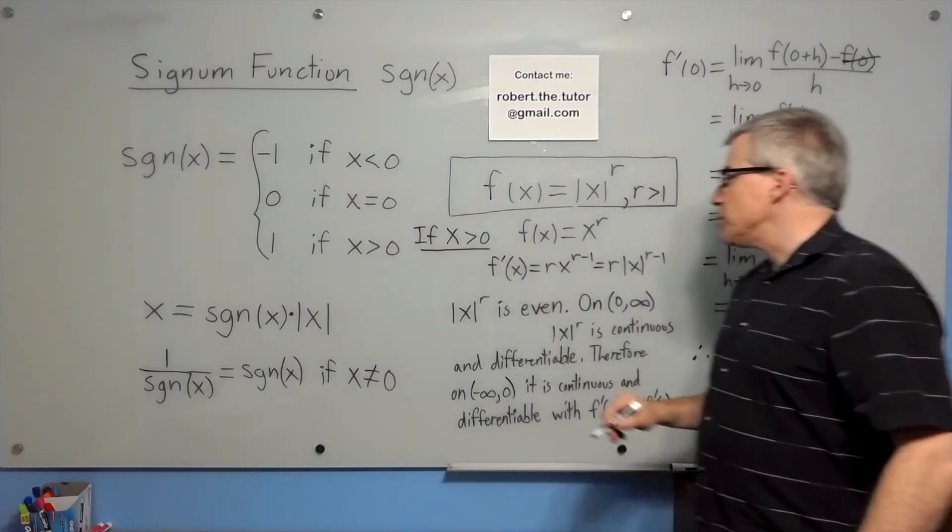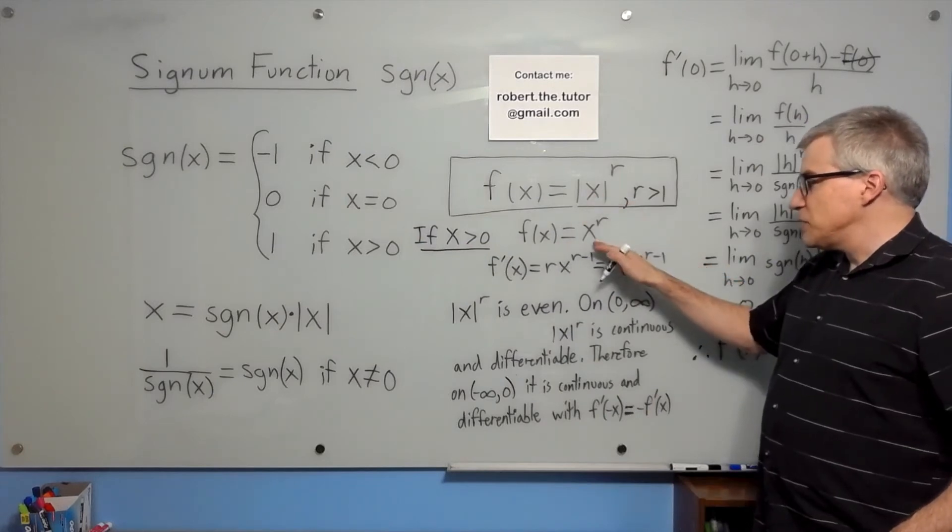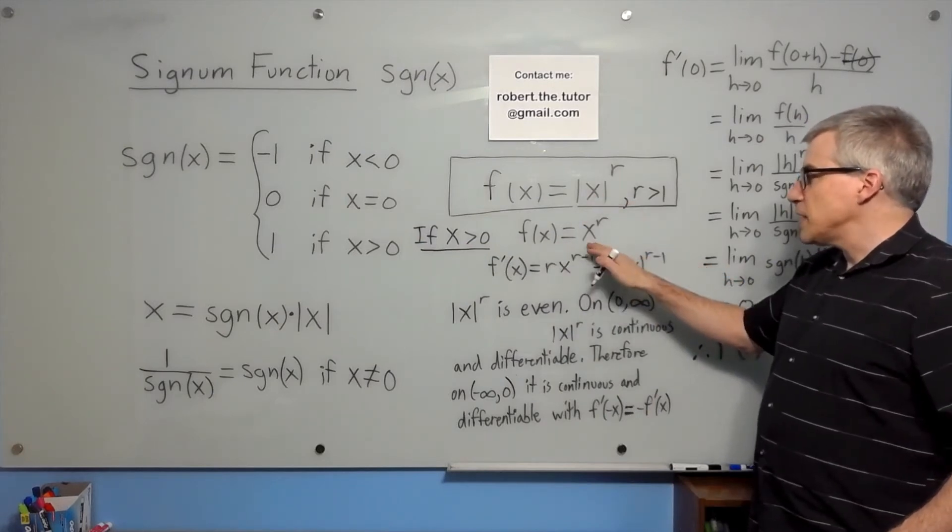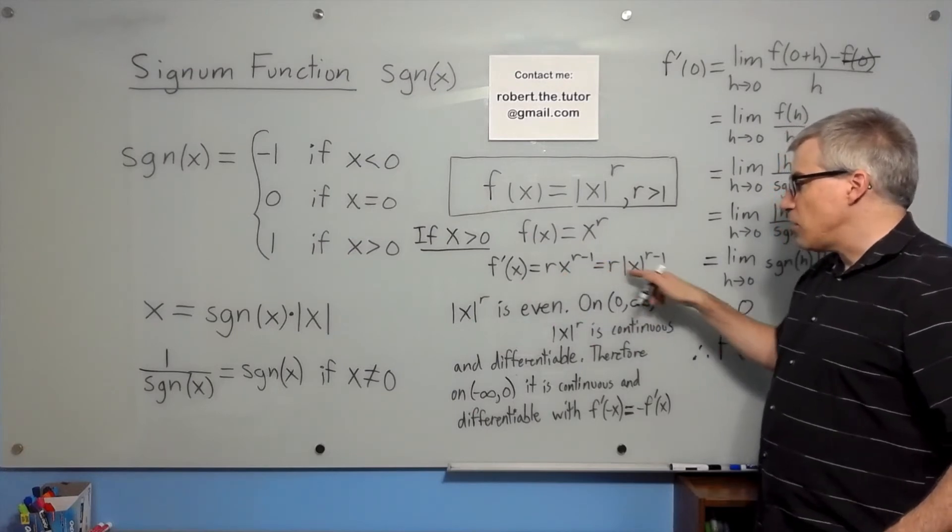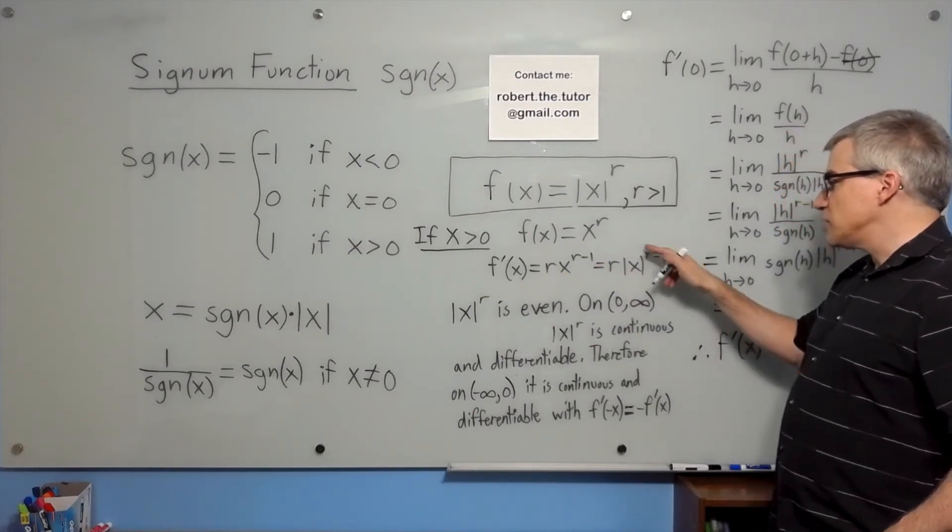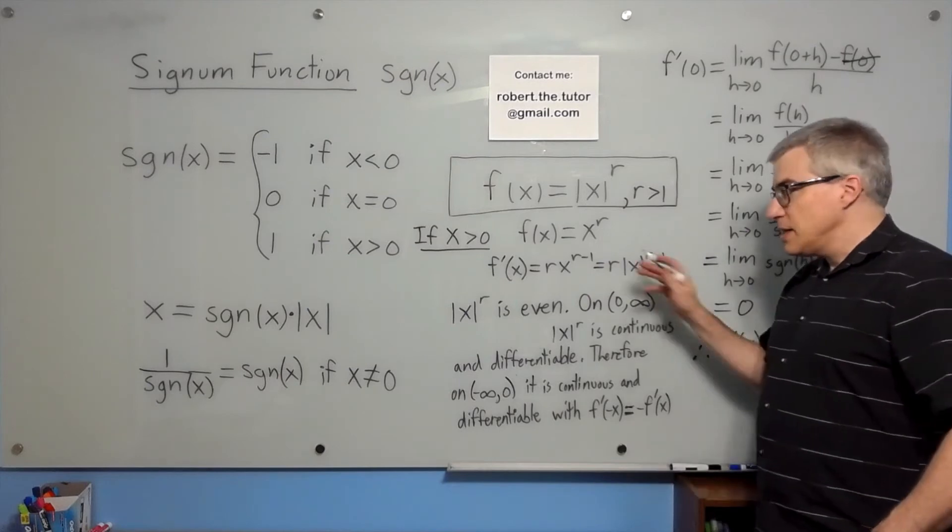If x is greater than zero, then absolute value of x is just x, and this becomes easy. f of x is x to the r, so f prime is r x to the r minus one. That also means r absolute value of x to the r minus one. That's if x is positive.